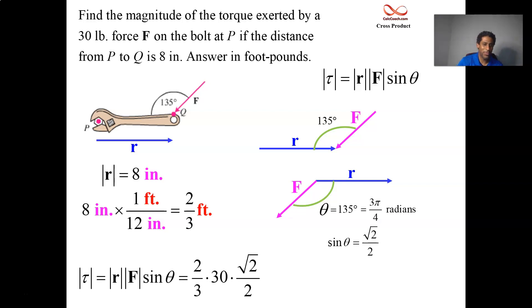So you're ready to answer this. Cancel the 2's. 3 turns the 30 into a 10. 10 root 2 foot-pounds.